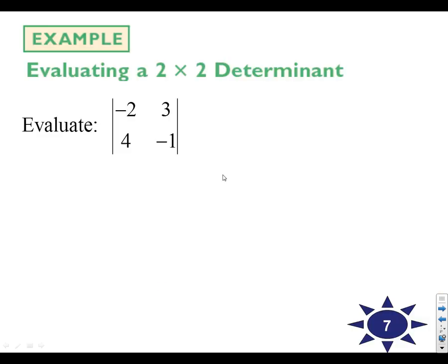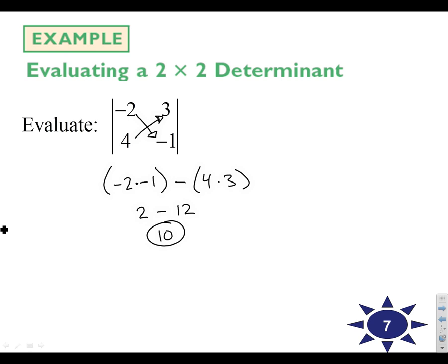Let's give this a shot. Multiply down: negative two times negative one, and then we're going to minus four times three, multiplying back up. So negative two times negative one is two, minus four times three is twelve, and so two minus twelve is negative ten. It's just that easy for two by two determinants. Three by threes are going to be a little trickier, but for two by twos it's just multiply down minus multiply up.